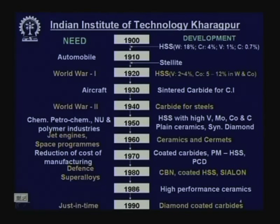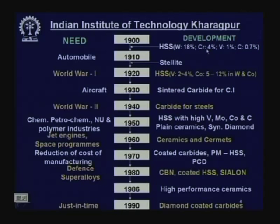What are the major constituents of high speed steel? High speed steel is termed '18-4-1': 18% tungsten, 4% chromium, 1% vanadium, and 0.7% carbon, with the rest being iron.